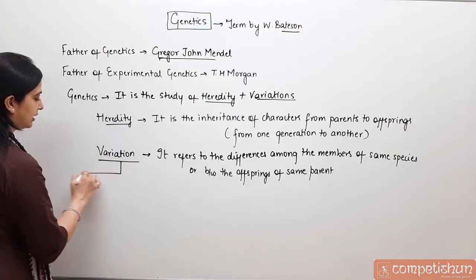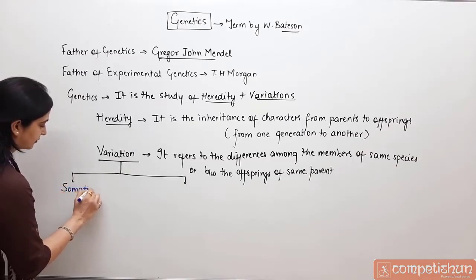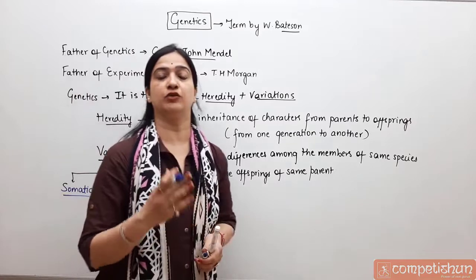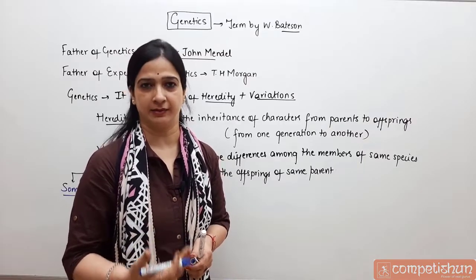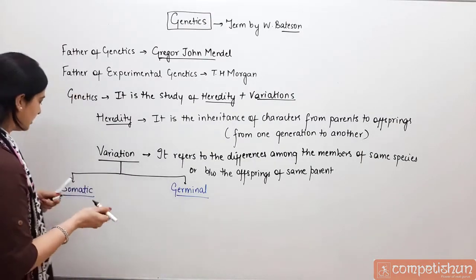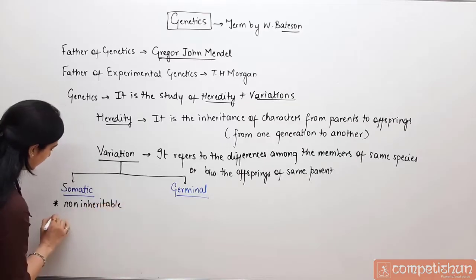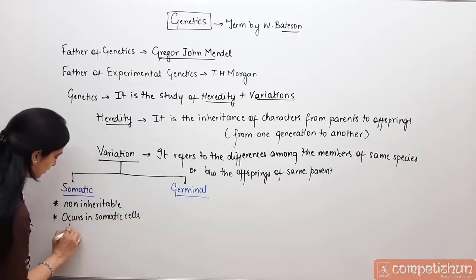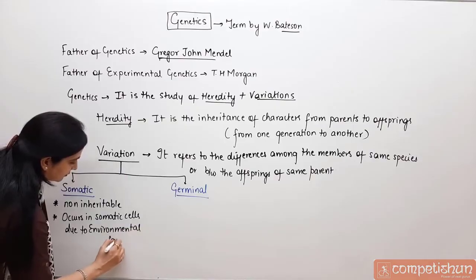Variations jo hote hain, yeh do tarike ke hote hain. Ek honge somatic variations and germinal variations. When we talk about somatic variations, we will get to see somatic variations in somatic cells. These are generally non-inheritable. They mainly arise because of the environmental factors or nutritional factors.